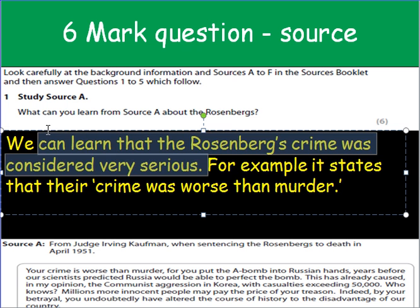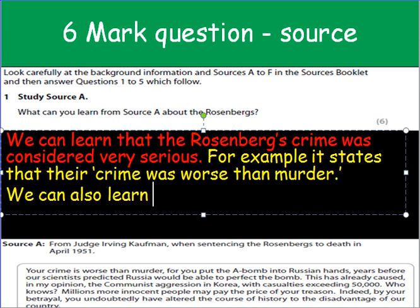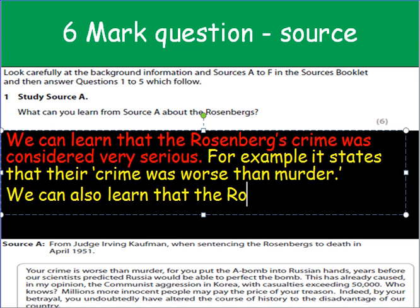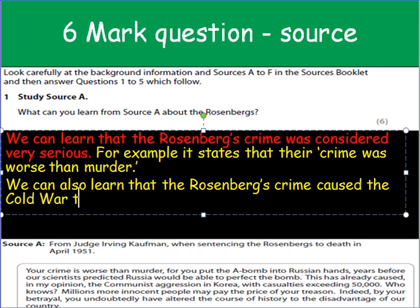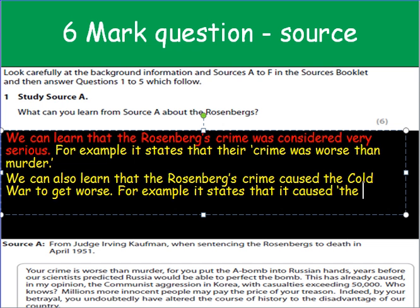And what we need to do in order to get full marks on this question, according to the mark scheme, is to be able to make another point. So it also says here that this caused the communist aggression in Korea. We can also learn that the Rosenbergs' crime caused the Cold War to get worse. For example, it states that it caused the communist aggression in Korea.